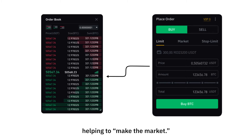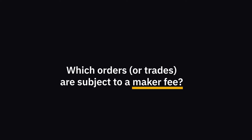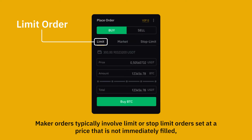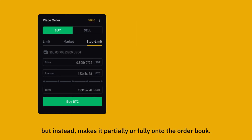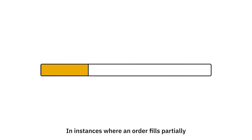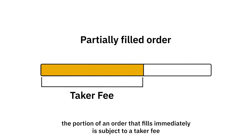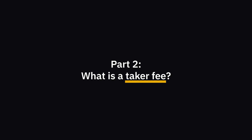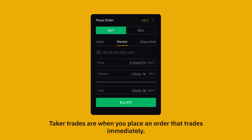Which orders or trades are subject to a maker fee? Maker orders typically involve limit or stop-limit orders set at a price that is not immediately filled, but instead makes it partially or fully onto the order book. In instances where an order fills partially, the portion that fills immediately is subject to a taker fee, while the portion that makes it onto the order book will be subject to a maker fee.